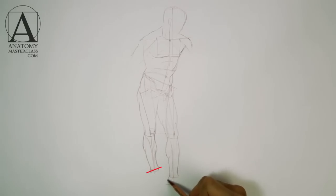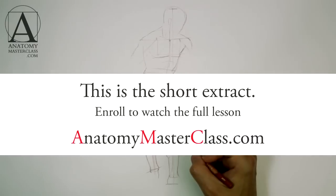You should also be aware that the axis of the ankle bones also runs on a diagonal. The inner ankle is higher than the outer one.